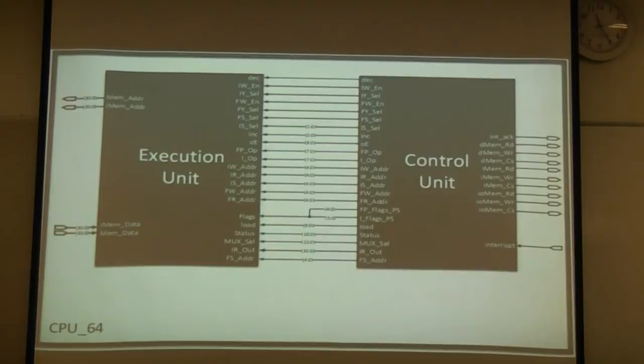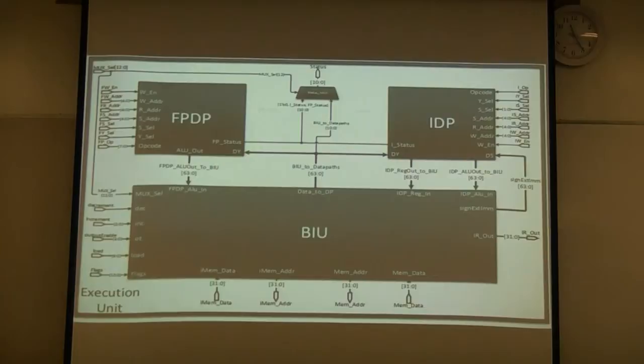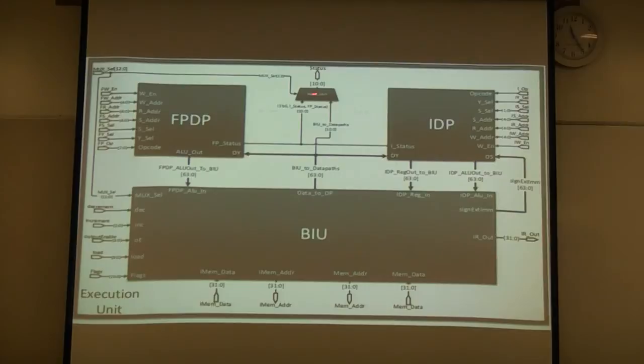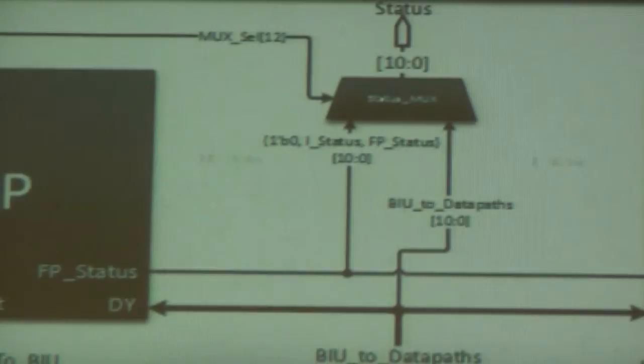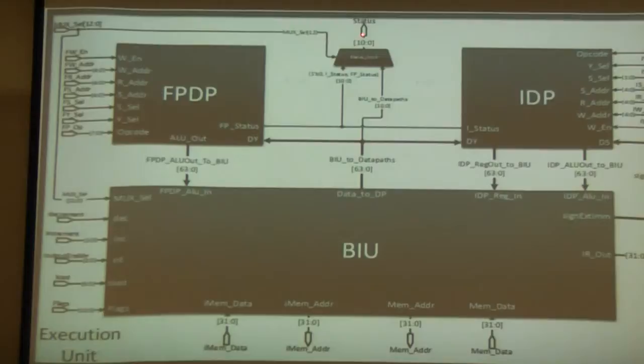Going in, here's our execution unit. We have the floating point data path, the integer data path, and the bus interface unit. One thing I'd like to point out is right there, we have a MUX that we use for our interrupts. That is how we get our flags from memory when we pop them off. They go through that MUX, and then that will go out and go into the control unit.